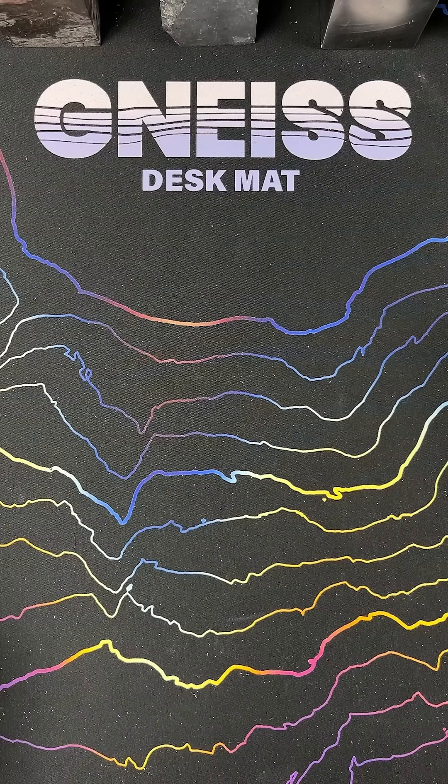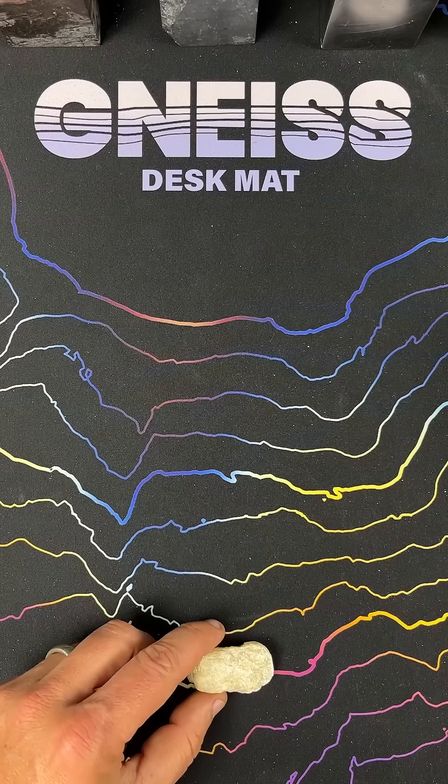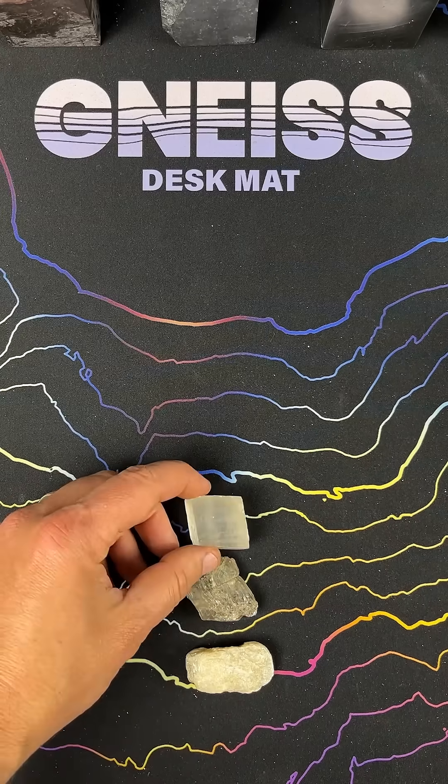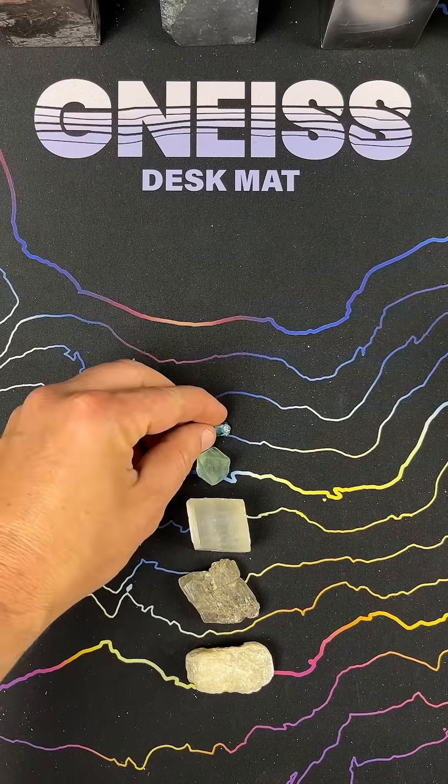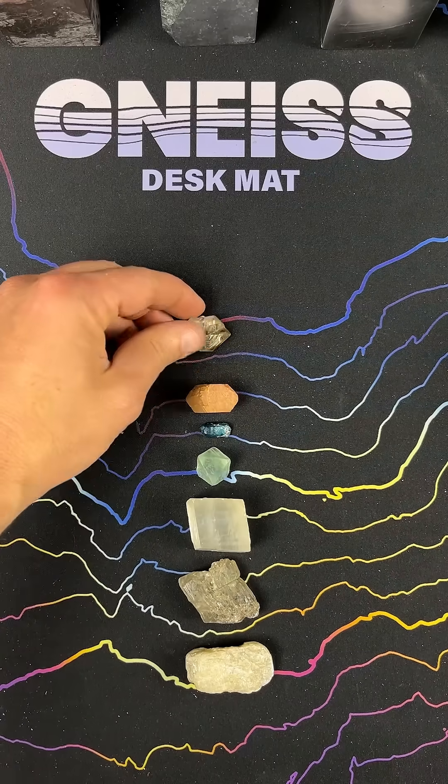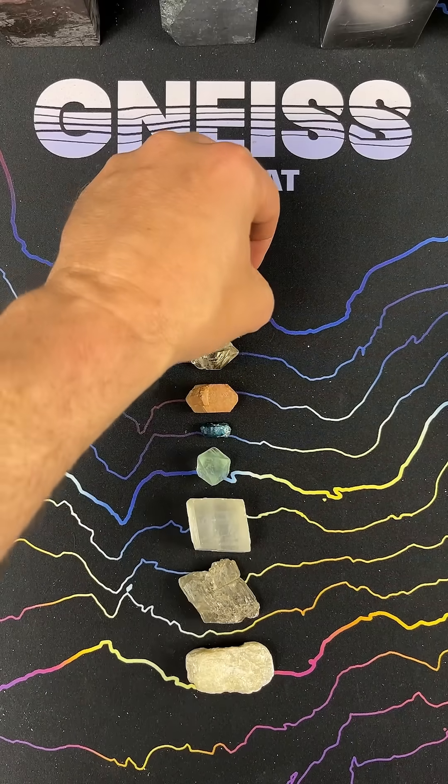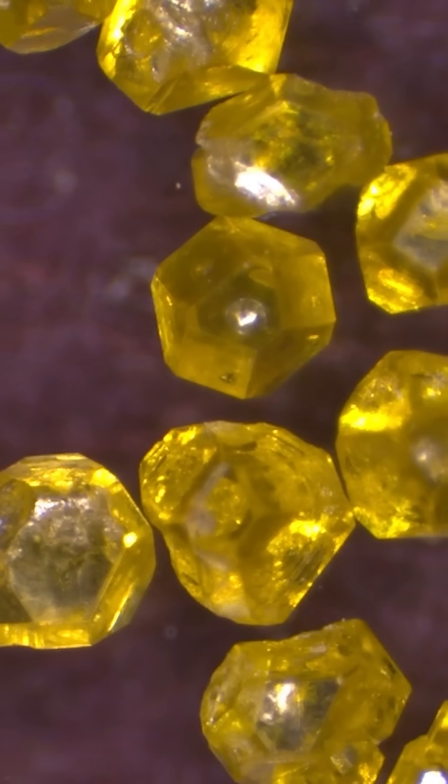Geologists commonly use the Mohs hardness scale when talking about how hard a mineral is. It starts with talc, which makes up soapstone. Next in order are gypsum, calcite, fluorite, apatite, orthoclase feldspar, quartz, topaz, corundum, which is ruby and sapphires, and then lastly, diamond.